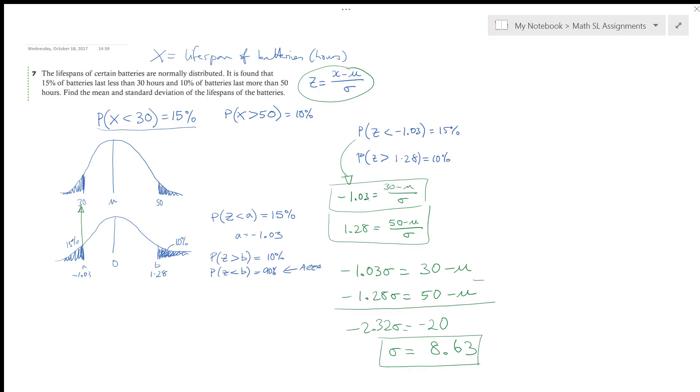Alright, let's just see if that kind of makes sense if we've got a standard deviation of 8.63 for the lifespan of the batteries. Let's see what we get for our mean. Now that we have that, I can use any one of these values. So maybe I'll use this one. Negative 1.03 is equal to 30 minus, oops, sorry, I'm trying to find the mean. I don't know the mean, divided by 8.63. Let's rearrange that a little bit. Negative 1.03 multiplied by 8.63 minus 30. So my mean is going to be 38.9. So that is the mean battery life. Alright, let's see if that makes sense.